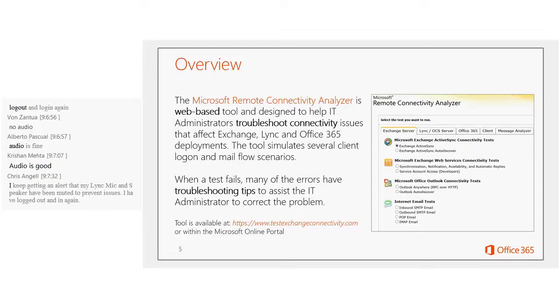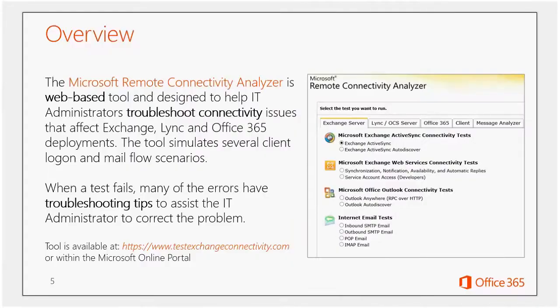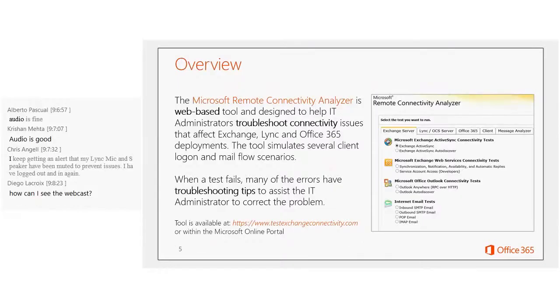The Microsoft Remote Connectivity Analyzer is a web-based tool that can be used to troubleshoot connectivity issues affecting all kinds of services. We can troubleshoot connectivity issues with Exchange Server on-premise, Lync Server on-premise, and most importantly for us, Office 365 connectivity. The tool helps administrators deploy Office 365 correctly so all clients can connect to the service correctly.